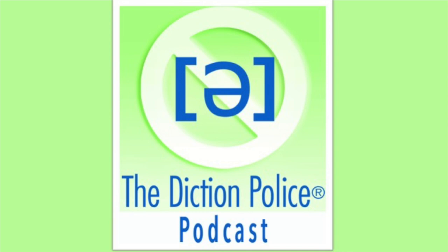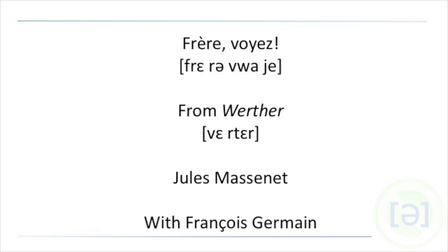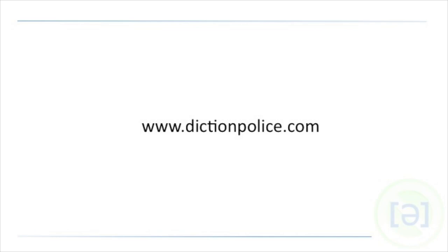In this episode, my partner in crime, François Germain, discusses the text to Sophie's aria from Werther with us, with an emphasis on consonants that should not be pronounced, but often accidentally are, the spelling O-Y, and how to avoid stressing unstressed syllables. For anyone attending the Classical Singer Convention this year in Boston, François will be there representing the Diction Police, so please stop by and say hello. For more information about François Germain, or for the accompanying PDF of this text, which includes an IPA transcription, along with the poetic and word-for-word translations, please visit dictionpolice.com. You can also follow the Diction Police on Facebook or Twitter.